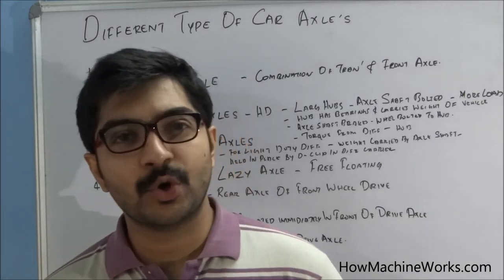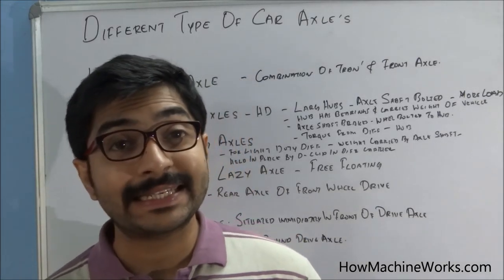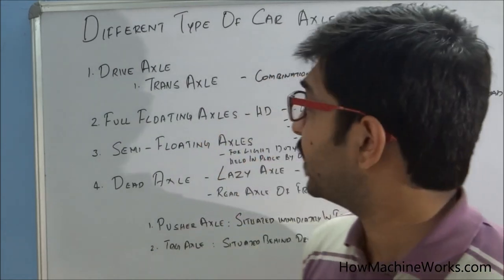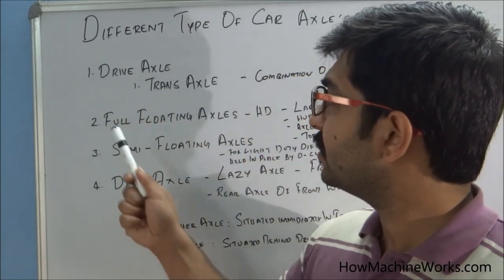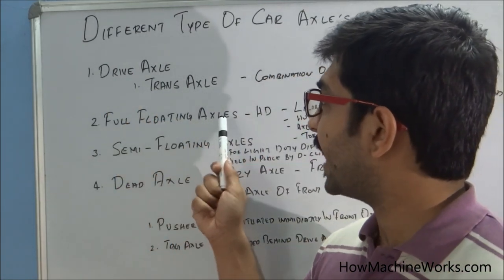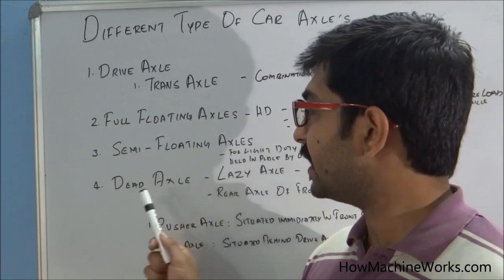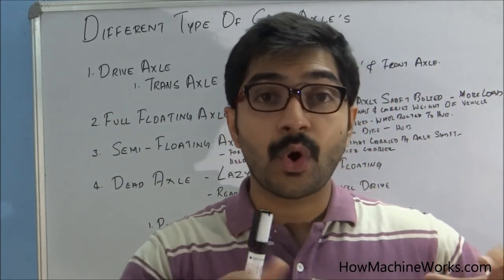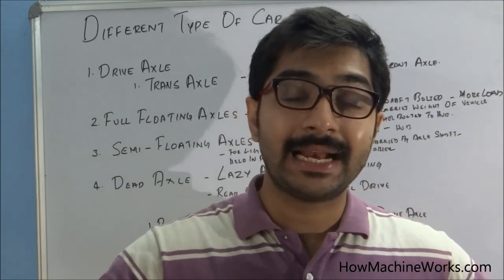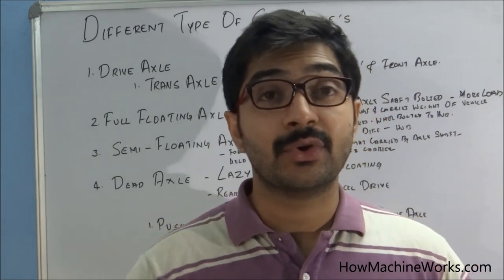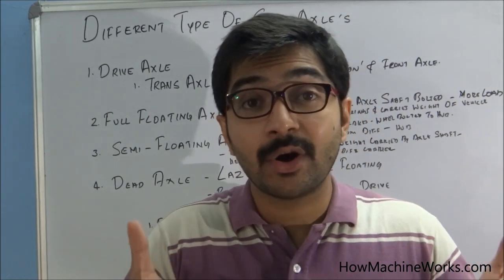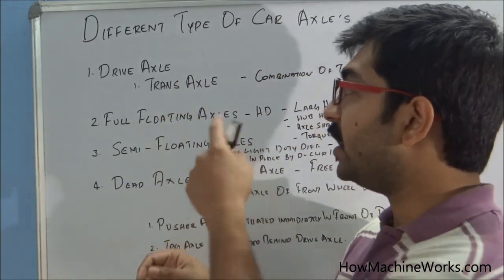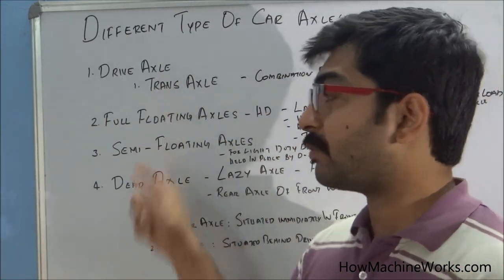Welcome back to howmachineworks.com. Today let's learn about different types of car axles. Car axles can be classified as drive axle, full floating axle, semi floating axle, and dead axle. Axles hold our tires and help them rotate properly, carrying all the load of the vehicle. Now let's go deeper into the different types of axles and see what makes them different.